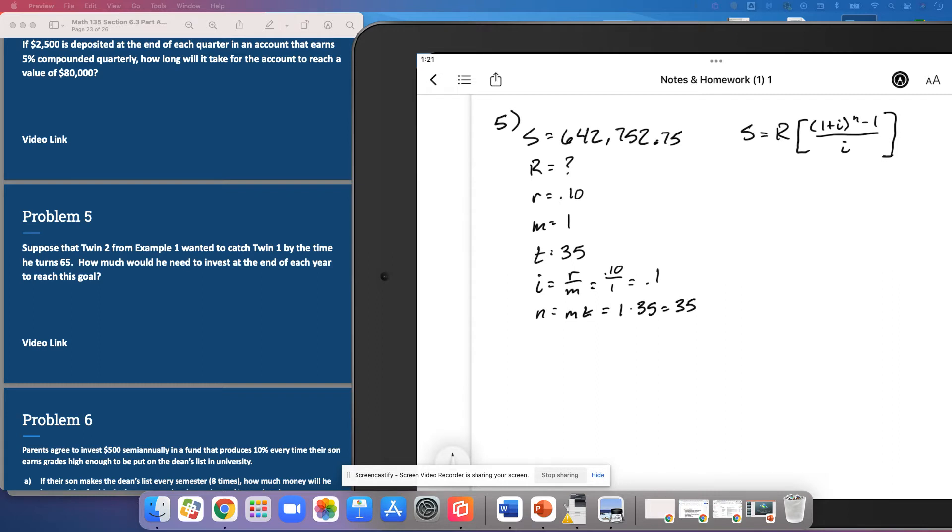And so the future value is what we're looking for here. So we've got to put our 642,752.75 is equal to R, which is what we're looking for, times 1 plus 0.1 to the power of 35 minus 1 over 0.1.